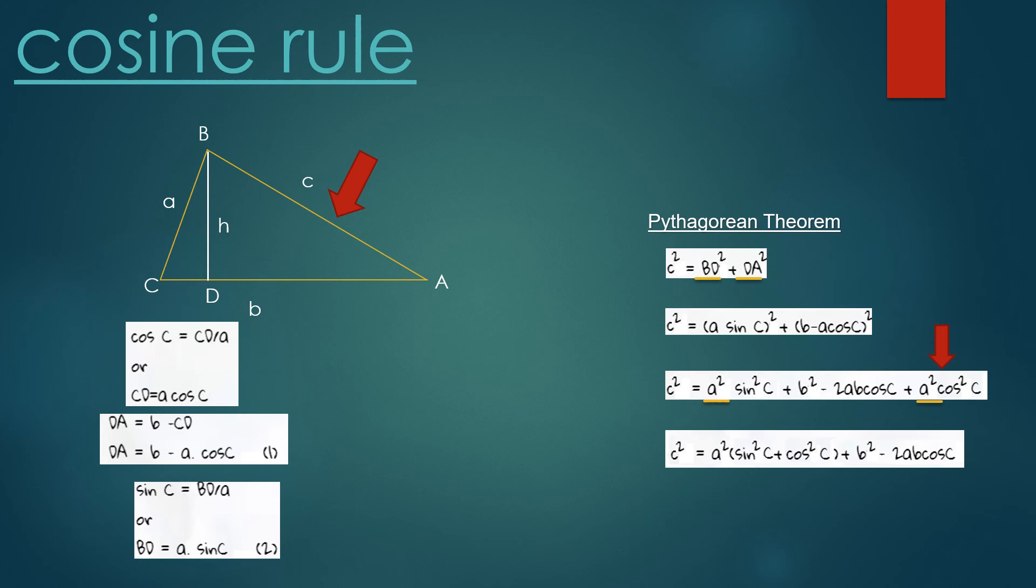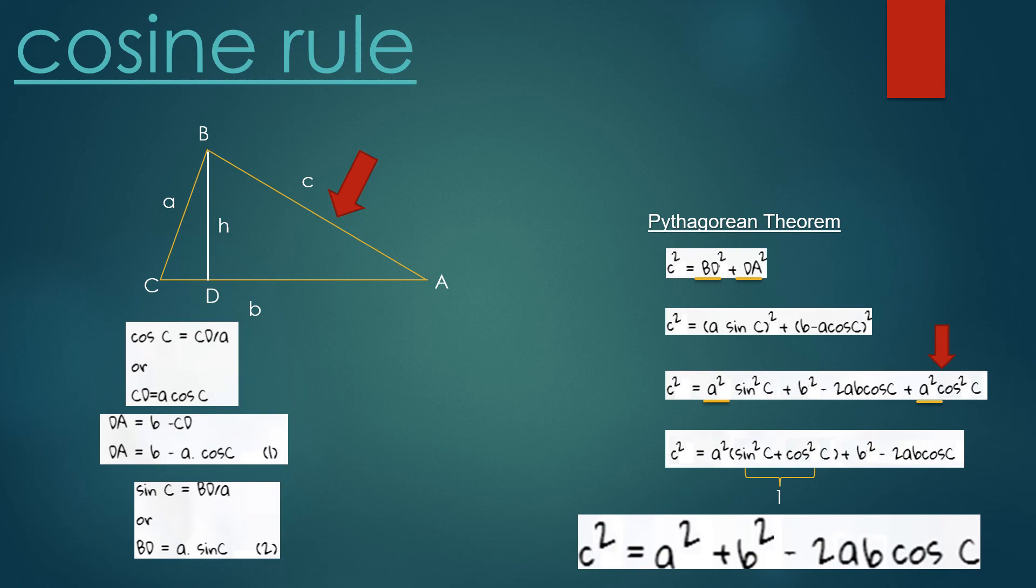Of course, we know that this term is equal to one—sin² C + cos² C of an angle equals one. So we can rewrite the last equation as c² = a² + b² - 2ab cos C.